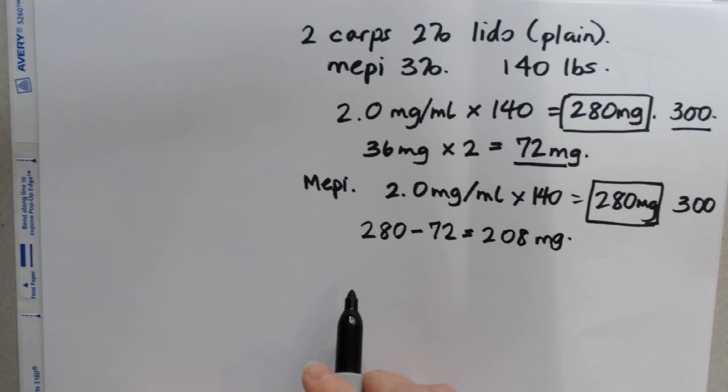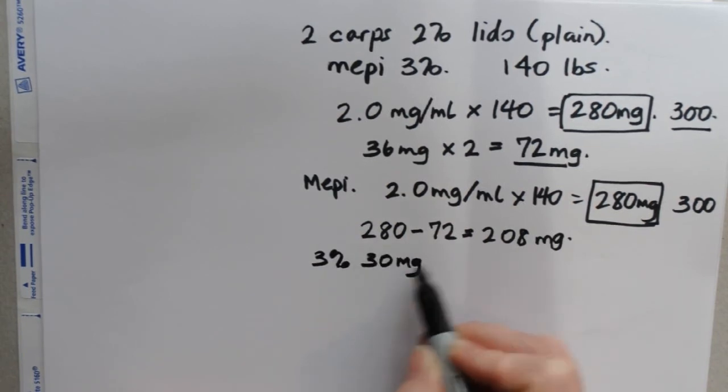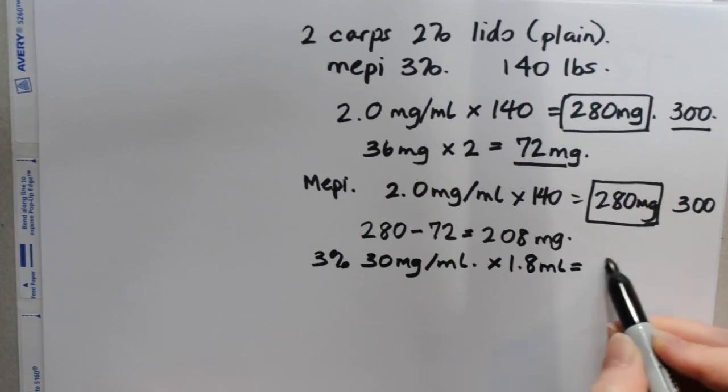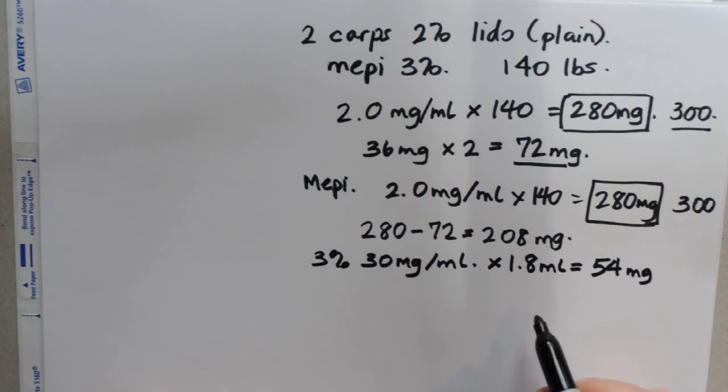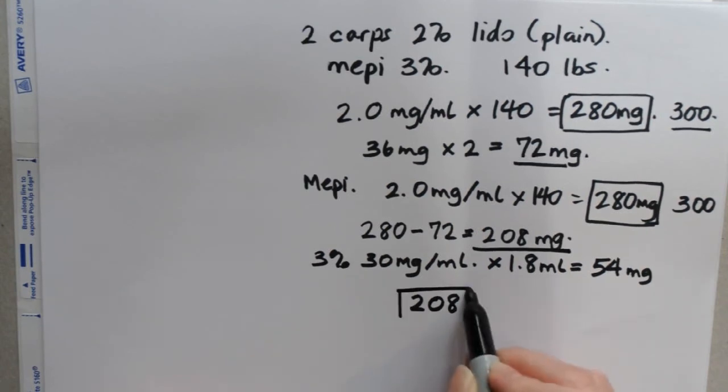So the next thing we need to do is make this clinically useful and put it in terms of carpules. So a 3% solution has 30 milligrams for every milliliter of solution. There's 1.8 milliliters in a carpule, therefore we've got 54 milligrams of mepivacaine drug in a single carpule. So to figure out how many carpules we can give, we're going to take the total amount that we have left, which is 208, divide it by how much is in a single carp, and we end up with 3.85.